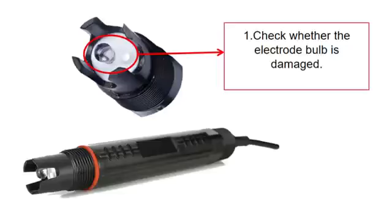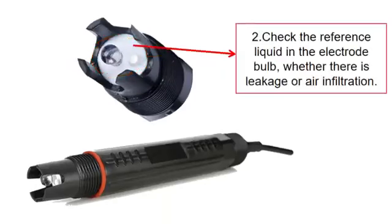First, we check the electrodes. Check whether the electrode bulb is damaged. Also check the reference liquid in the electrode bulb, and whether there is leakage or air infiltration.